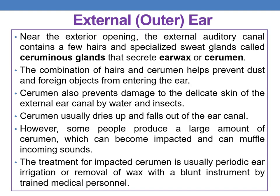Near the external opening, the external auditory canal contains a few hairs and specialized sweat glands called ceruminous glands that secrete ear wax, or cerumen. Hair and cerumen together help prevent dust and foreign objects from entering the ear, and cerumen also protects the delicate skin from water and insects. It usually dries up and falls out; however, some people produce large amounts which can become impacted, muffling incoming sounds. Treatment is periodic ear irrigation or removal with a blunt instrument by a trained medical professional.